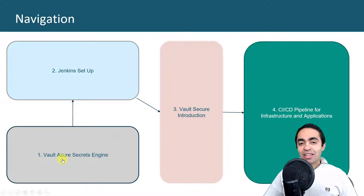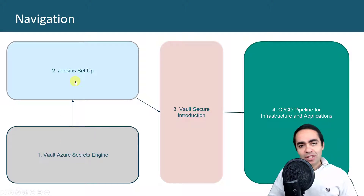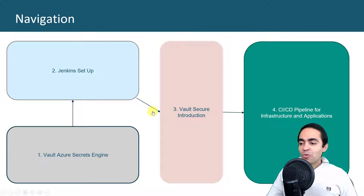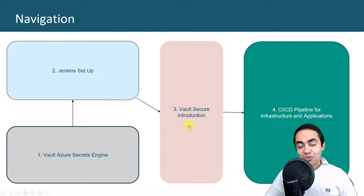Jenkins takes us to the second video — Jenkins setup — where we set up Jenkins using Terraform, using Vault of course to create credentials in Azure, and also using Ansible. If you want to go back, I'll reference the two videos in the description. I highly encourage you to go back and watch those two videos before watching this one. In this video we're going to talk about Vault secure introduction — what that means, what secret zero is all about, and how we introduce those secrets into the environment.